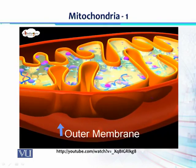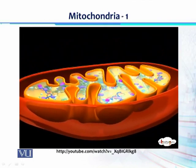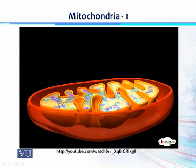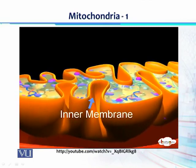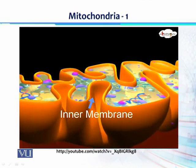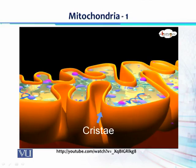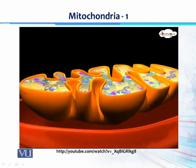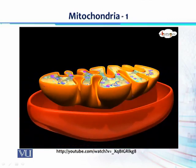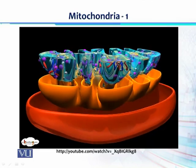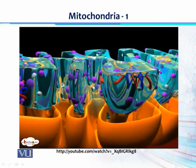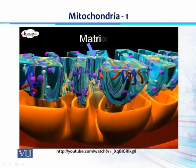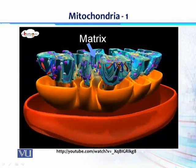The outer membrane is smooth and covers the organelle. The inner membrane folds over many times and creates layered structures called cristae. Most of the chemical reactions of the cellular respiration process happen in the inner membrane due to the high concentration of enzymes. The fluid contained in the mitochondria is called the matrix.